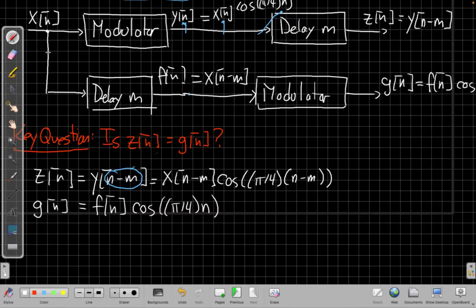So now we say well I know f[n] in terms of x. Right I took x[n] as my input delayed it by m so f[n] is equal to x[n-m] and so now I can use that to say I can substitute this in here for this f[n].